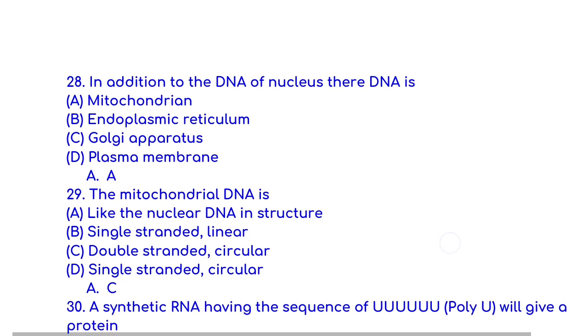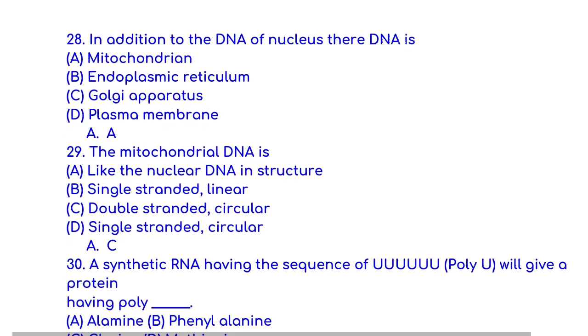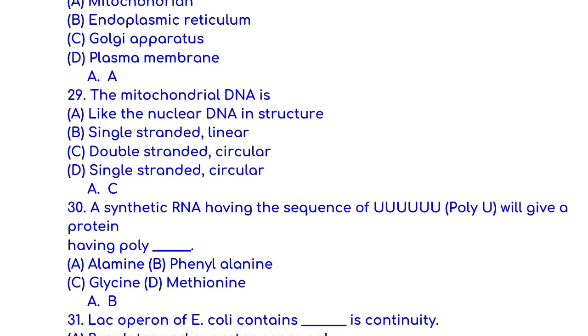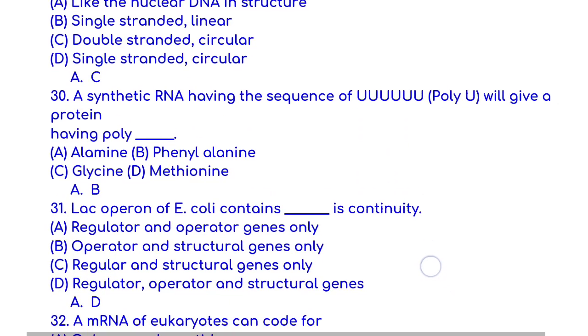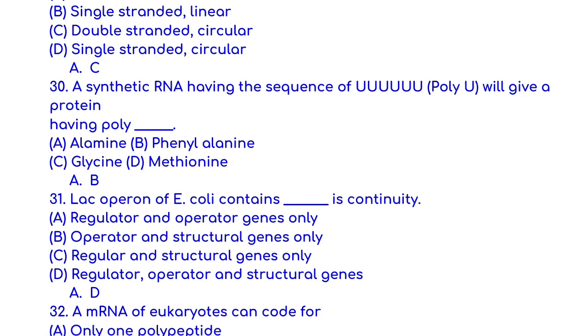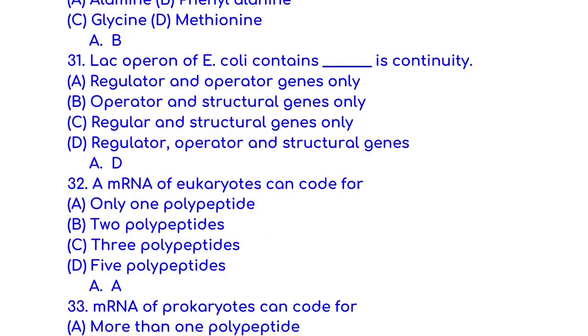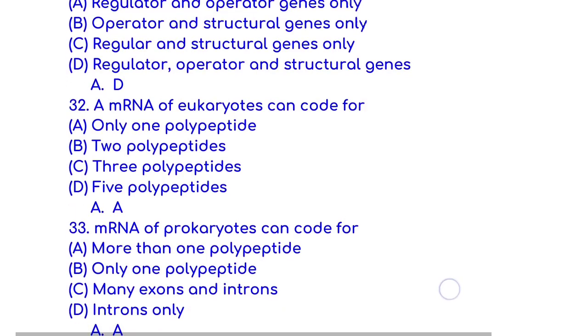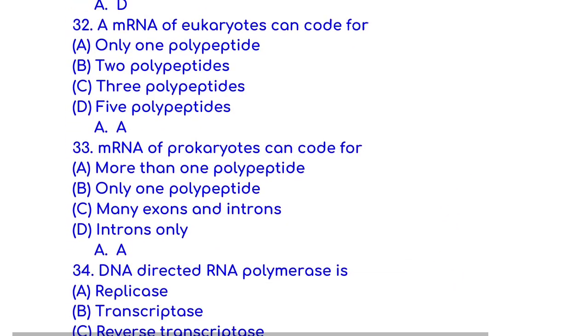In addition to the DNA of nucleus, there is DNA in mitochondria. The mitochondrial DNA is double-stranded circular. A synthetic RNA having the sequence of poly-U will give a protein phenylalanine. Lac operon of E. coli contains regulator, operator, and structural genes.